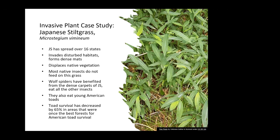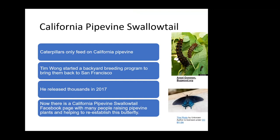Another case in California where they have restored the pipevine swallowtail: there was just one person that started growing California pipevine and rearing the butterflies on it in a butterfly house. Other people picked up on it, and in the San Francisco area they're bringing this butterfly back.